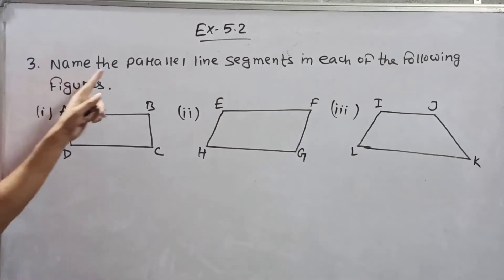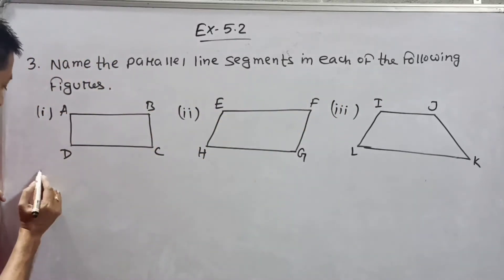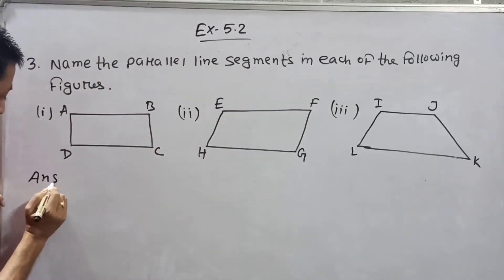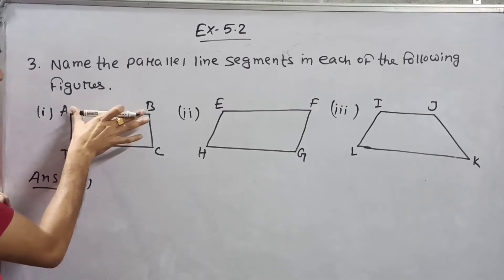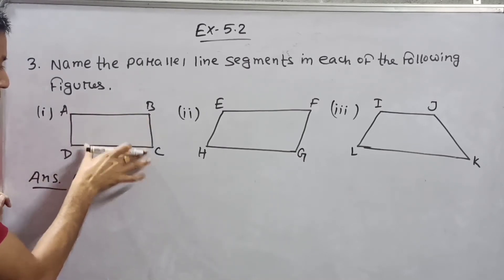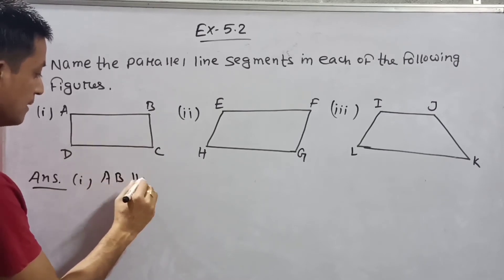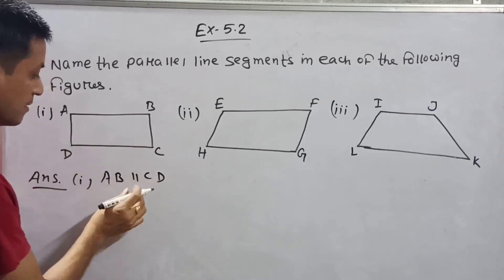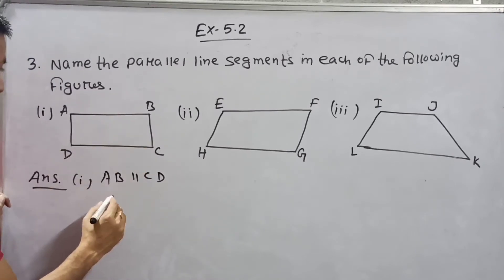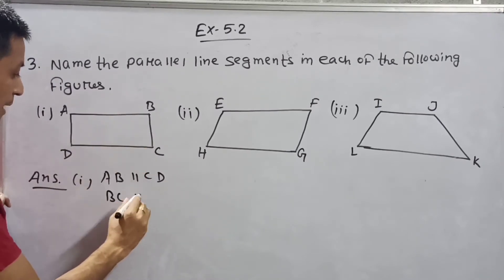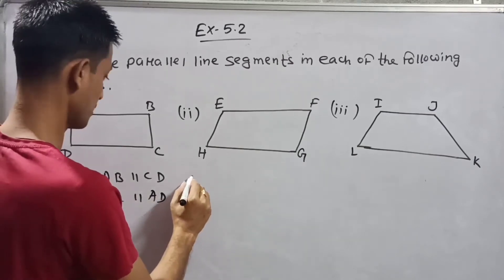So number three: name the parallel line segments in each of the following figures. Answer for figure 1: AB is parallel to CD — this is the symbol of parallel — and BC is parallel to AD.